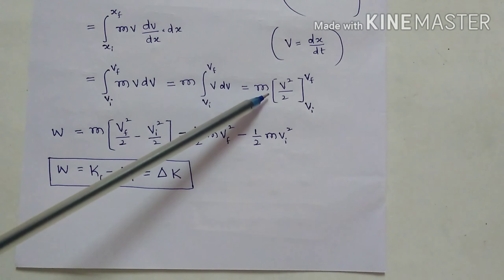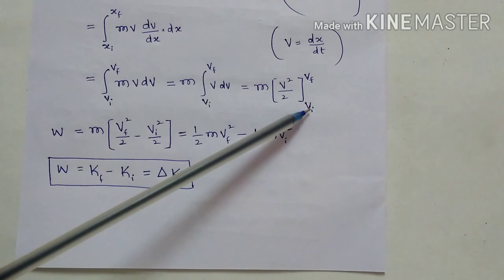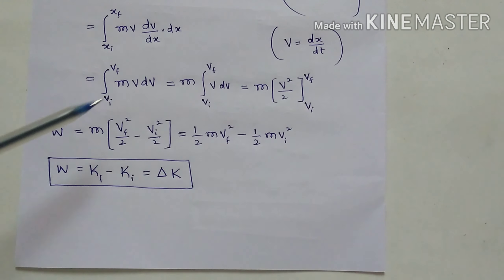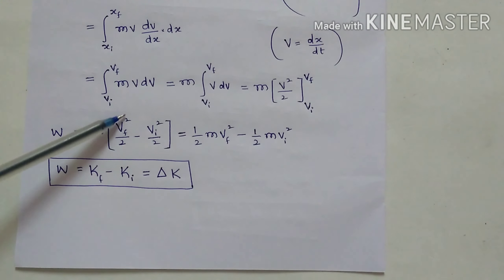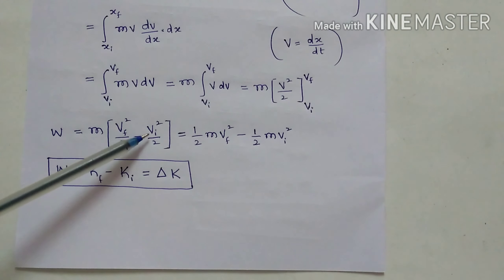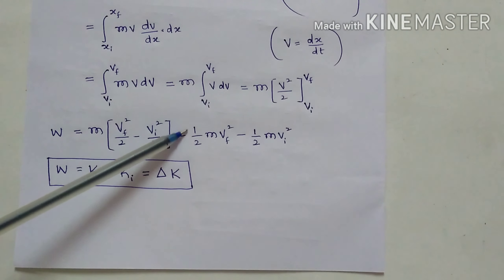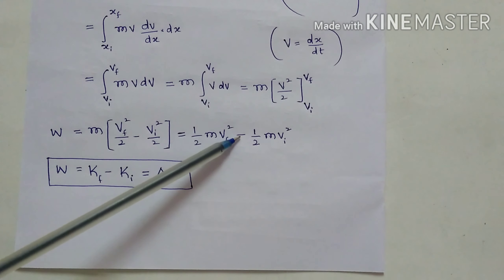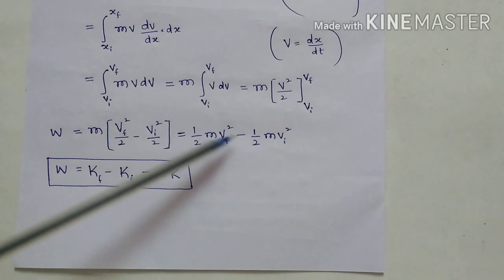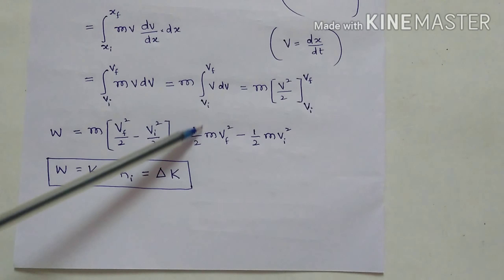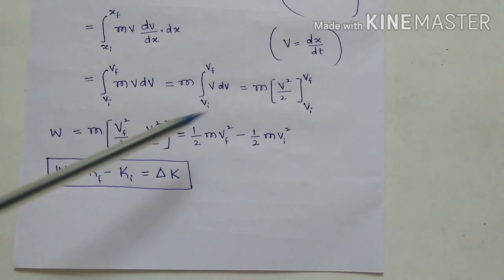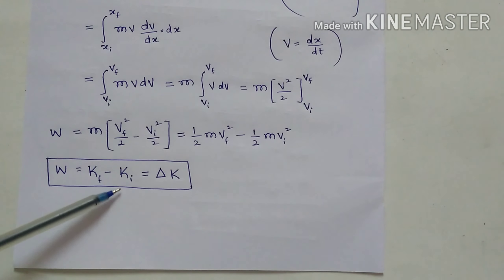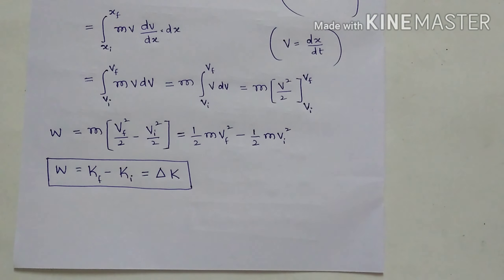Integrating, we get m × [v²/2] from vi to vf, which gives m × (vf²/2 − vi²/2). This is ½mvf² − ½mvi², which is final kinetic energy minus initial kinetic energy. Therefore W = Kf − Ki = ΔK. This is another method to prove the work-kinetic energy theorem.